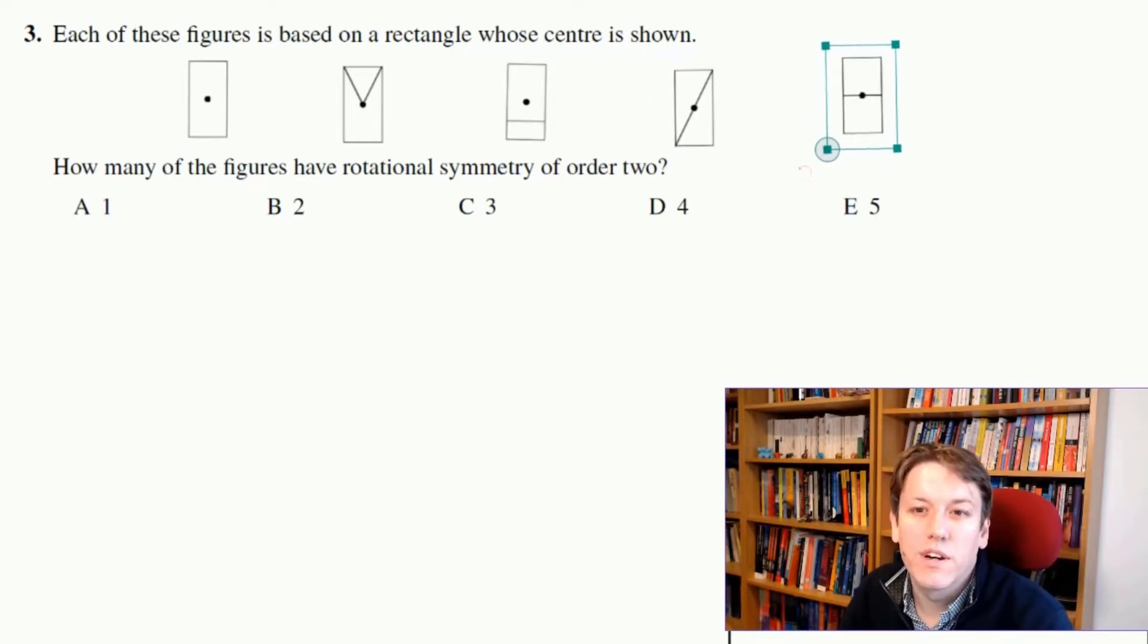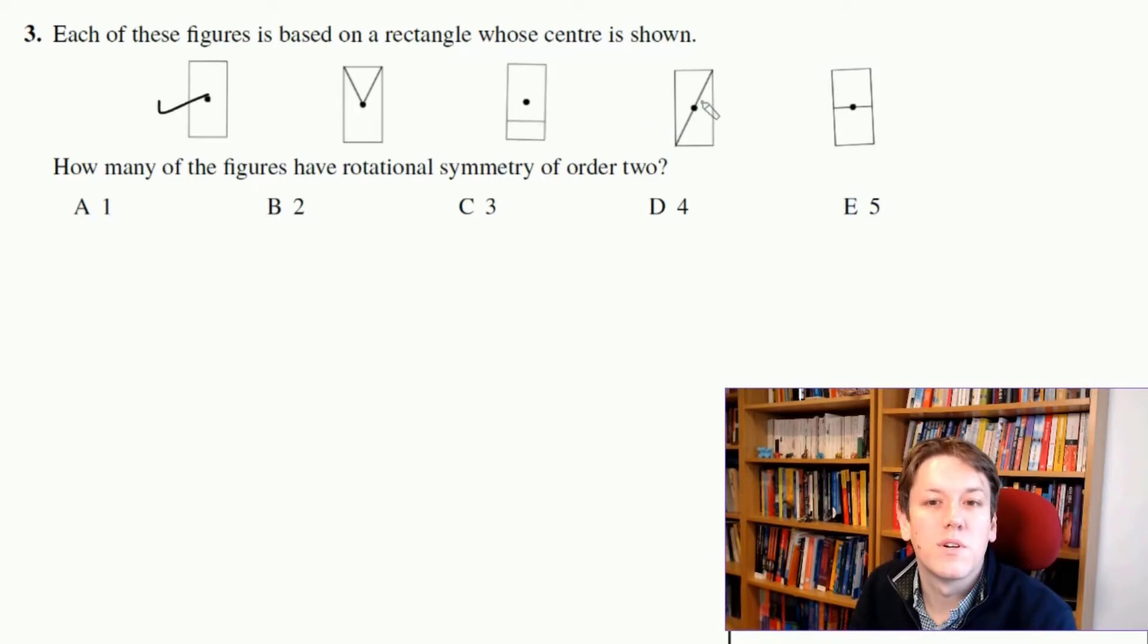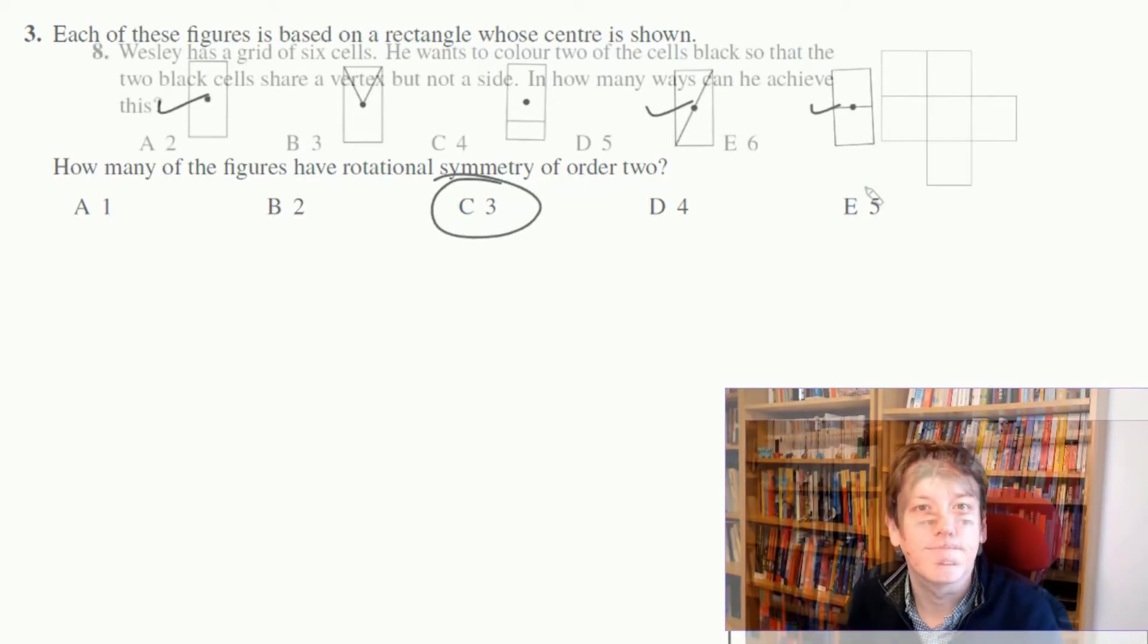For this one, when I rotate it halfway around, that line ends up the same way around, and then I go the full way around. So that one has rotational symmetry of order 2. And the last one, when I get halfway around, it looks the same. And again, when I'm back at the start, so that one has rotational symmetry of order 2 as well. So it was this one, this one, and this one. And the question is how many of them have order 2? So the answer is 3, C.